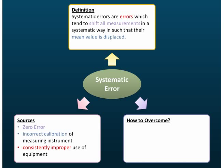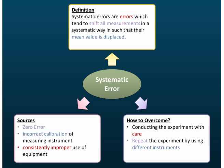To overcome systematic error: conduct the experiment with care, and repeat the experiment using different instruments — it must be different instruments. If you repeat using the same instrument, this won't help, because you cannot remove systematic error by finding the mean or average of your readings.